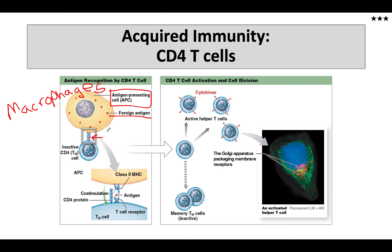This process results in the antigen presenting cells — notice that acronym, APC, because I might use it on the exam. These antigen presenting cells will then activate the helper T cell. Just like the CD8 cell, this activation requires co-stimulation. Here is my CD4 antigen binding receptor recognizing this antigen, and here you can see my MHC class 2 receptors and my T cell receptor, which recognizes that MHC class 2.